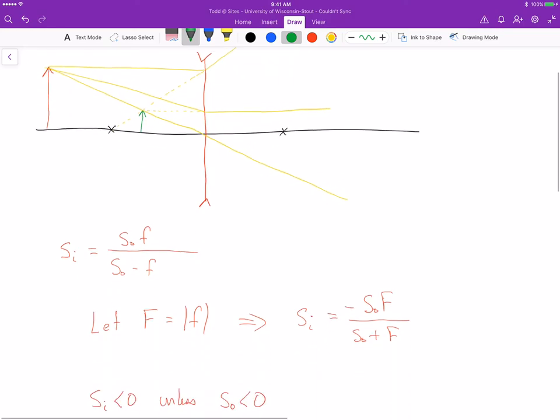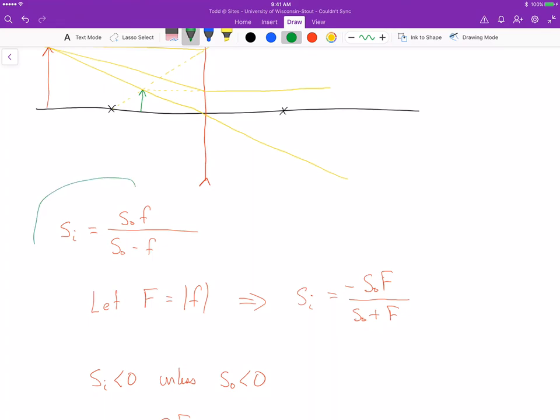So I'll write out my equation for the image location, and then because the focal length for the diverging lens is negative, I'm going to pull that negative sign out explicitly. I'm going to define capital F as the magnitude of the focal length, and then that minus sign comes out right here and right there.